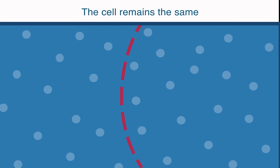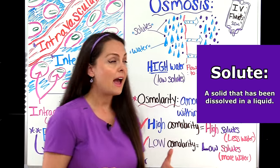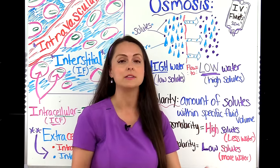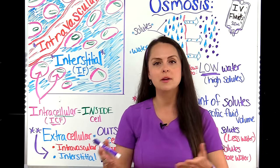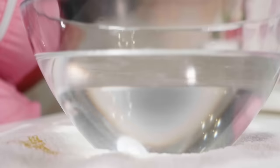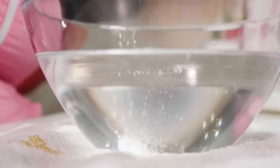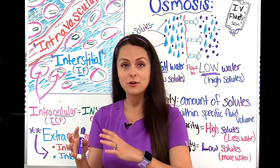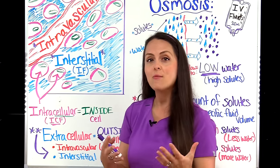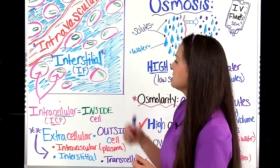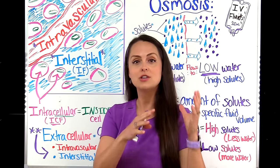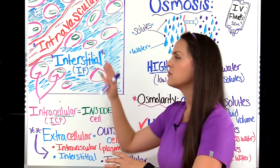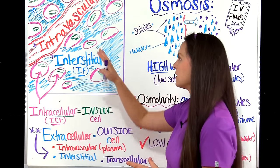The big takeaway from osmosis is that this process is highly influenced by a fluid's solute concentration. Depending on how concentrated that fluid is in solutes will determine how osmosis affects how water shifts from the extracellular space to the intracellular space, or vice versa. A solute is a solid that has been dissolved in a liquid. For example, we can take sodium and chloride in their solid form, put them in a liquid, and once they dissolve they become an electrolyte — but they're still a solute in that fluid.